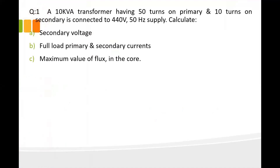The first numerical is: a 10 kVA transformer having 50 turns on primary and 10 turns on secondary is connected to 440 V, 50 Hz supply. Calculate: first, secondary voltage; second, full load primary and secondary currents; and third, maximum value of flux in the core.